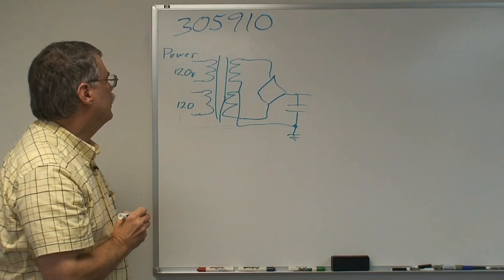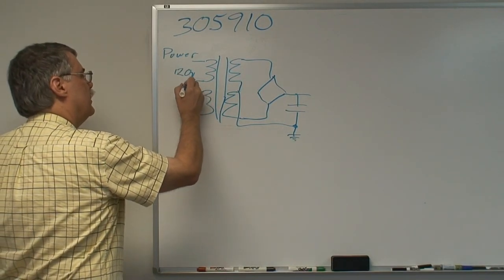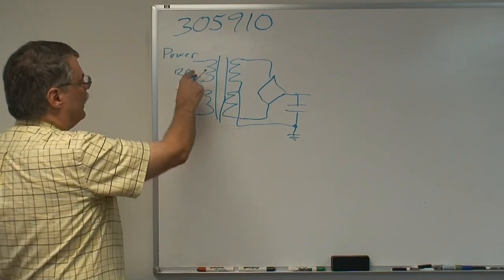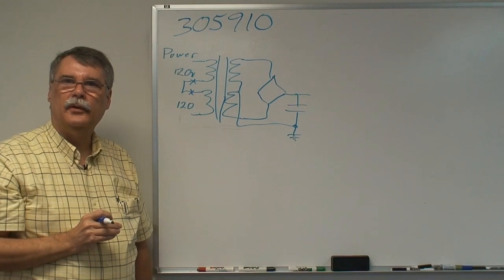Now with the two primary windings on this transformer that runs this thing, we have two choices. Each of these windings is 120 volts. So we can hook them up one way, that we can put a jumper from here to here, and that adds 120, 120, and we can operate this thing on 240 volts.